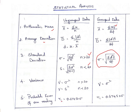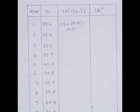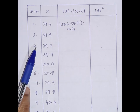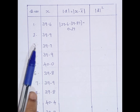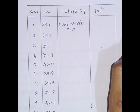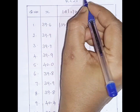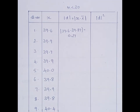The probable error of one reading, R₁, indicates one reading. R₁ is 0.6745 multiplied by the standard deviation in both cases. Now our data comes under ungrouped data. For the given data, it is always good to form a table. It is ungrouped data, and we have 10 readings, so n is less than 20.